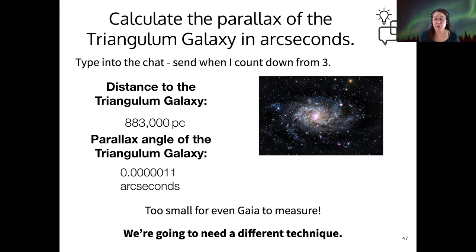And it's even useful for measuring the distance to some stars that are outside of the Milky Way in kind of the halo that surrounds the galaxy, which we'll talk about next week. But it's not very useful for measuring the distance to other galaxies. That parallax shift is just too small.